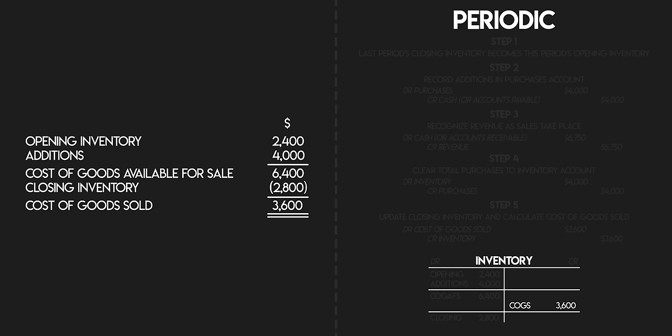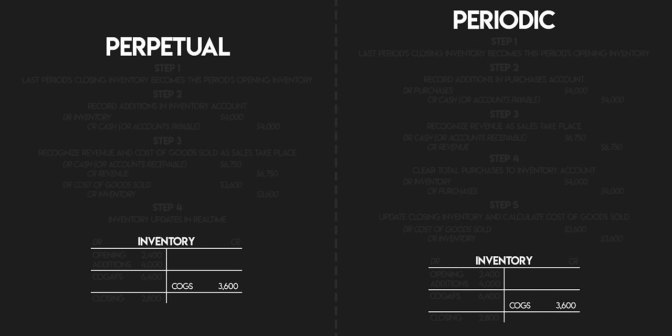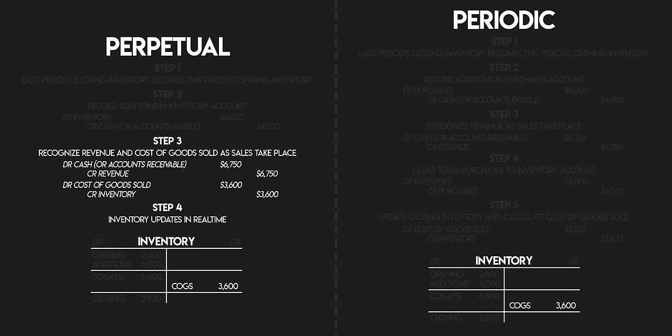You can see that your cost of goods sold under the periodic method is exactly the same as under the perpetual method — $3,600. The difference is in the timing. In the perpetual system, you were able to see your results in real time because both revenue and cost of goods sold were continuously updated as you sold inventory. In the periodic system, you needed to wait for the inventory count at the end of the month to find out your cost of goods sold — it took longer to find out your results. Don't forget to subscribe for more inventory videos coming soon, and I'll see you next time.